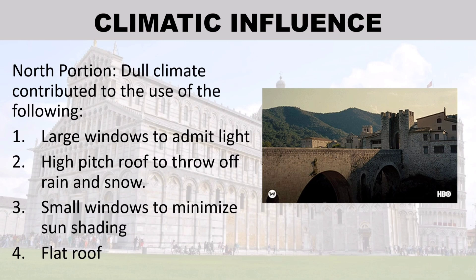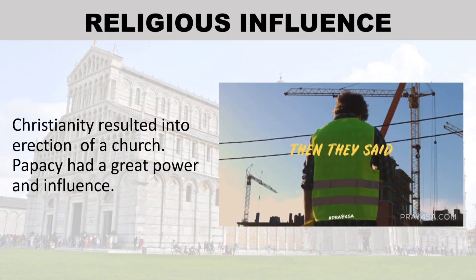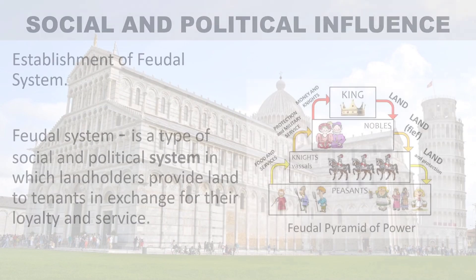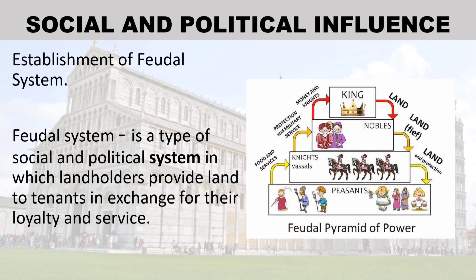Climatic influence: The north portion's dull climate contributed to the use of the following — large windows to admit light, high-pitched roofs to throw off rain and snow, small windows to minimize sun shading, and flat roofs. Religious influence: Christianity resulted in the erection of churches; the papacy had great power and influence.